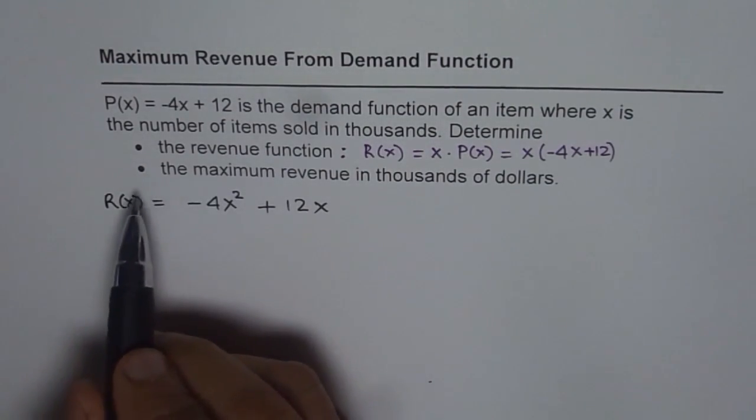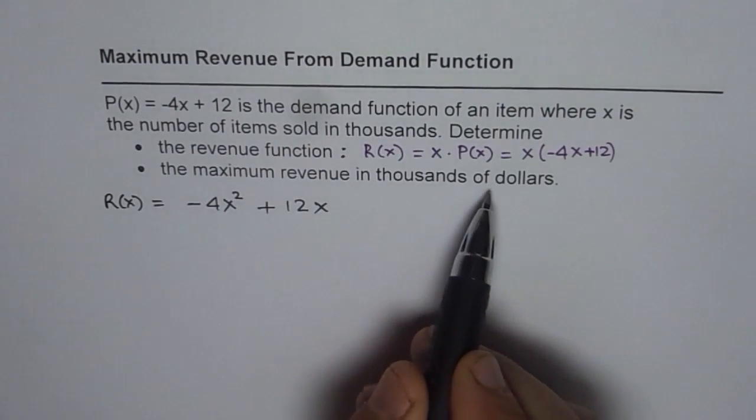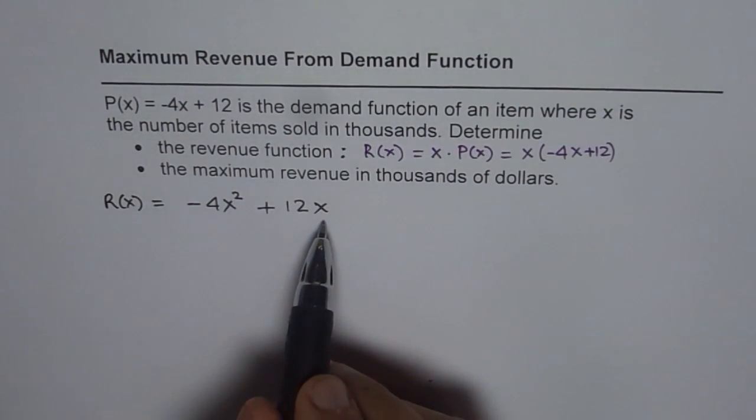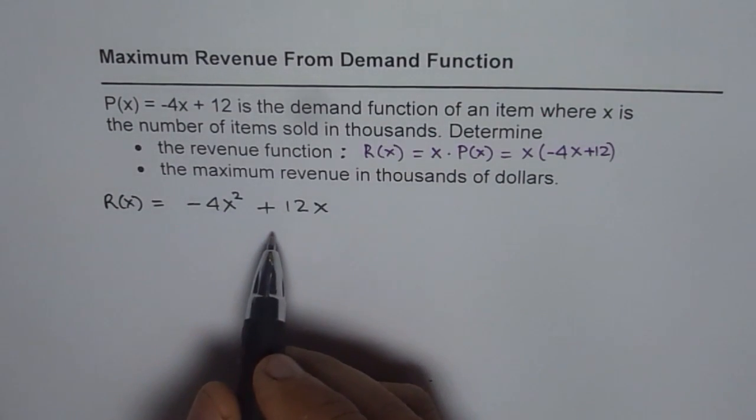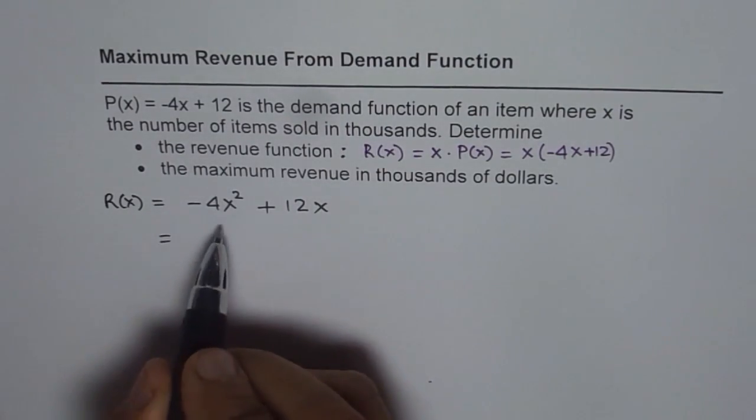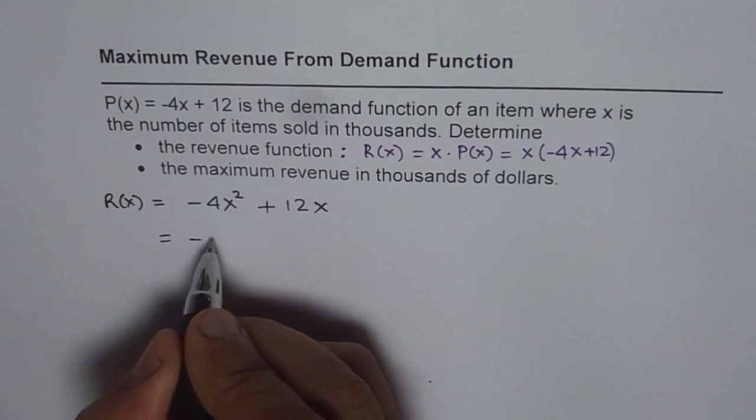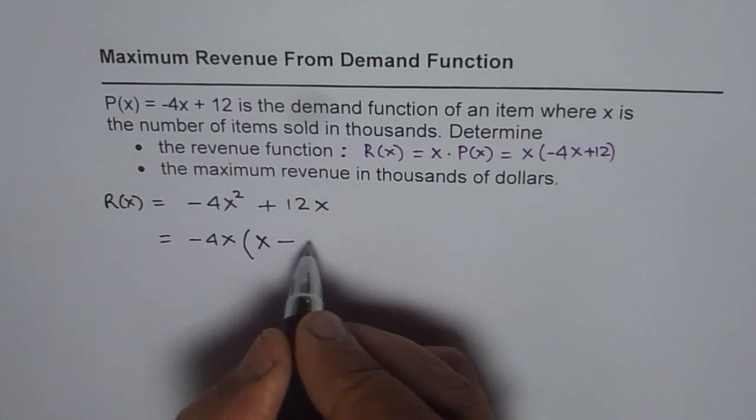Now part 2 is the maximum revenue in thousands of dollars. Now x is in thousands, right? So this revenue will be in thousands of dollars. Now we can adopt different methods. I will use partial factoring to find the answer. So in partial factoring, we will just factor these two terms and we have -4x as common. So we are left with x minus 3.